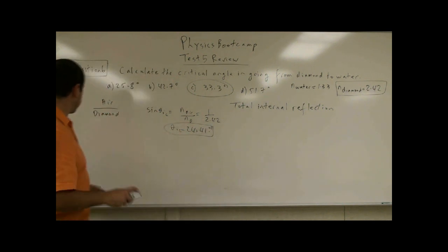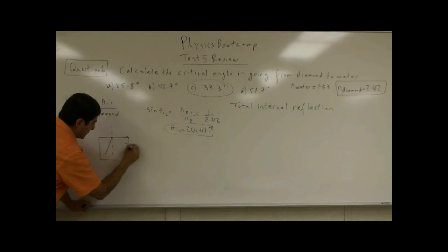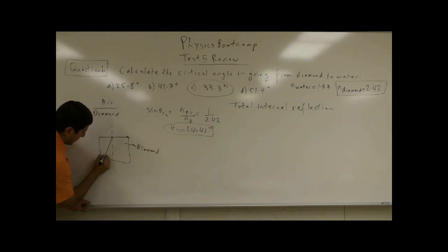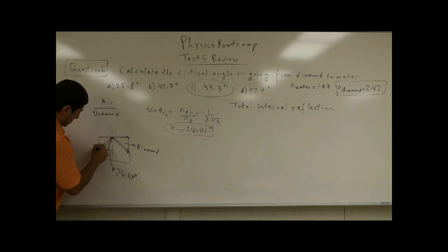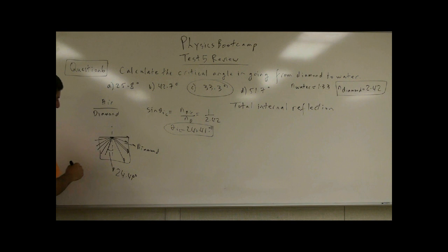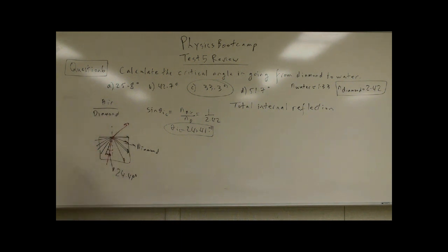What does that mean? If you have a diamond and a beam of light is inside it, this is the critical angle — any ray of light at 24.41 degrees slides along the surface. Look how small that angle is. Any beam of light coming at more than that reflects inward, again and again. The angle of reflection equals the angle of incidence. Since the critical angle for diamond is so small, diamond more easily traps light and doesn't permit it from escaping — only beams coming at less than 24 degrees can escape.